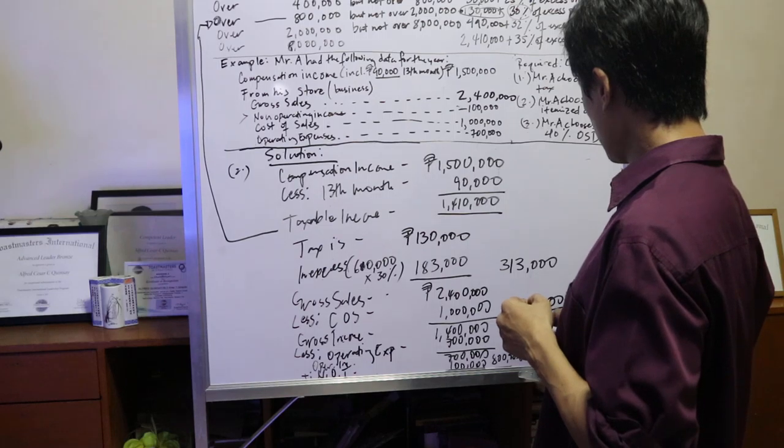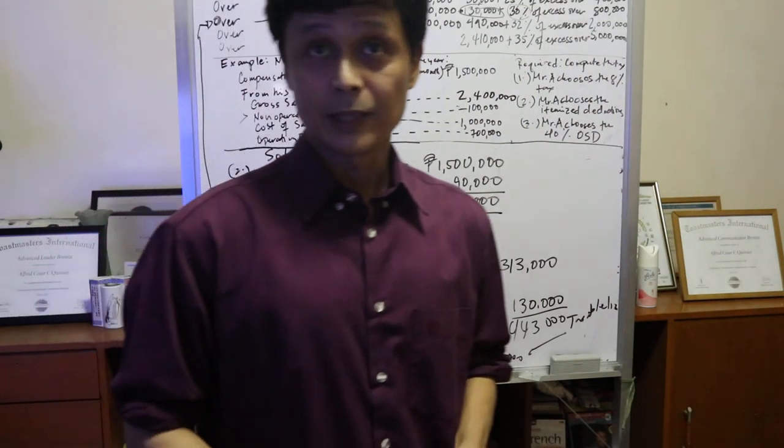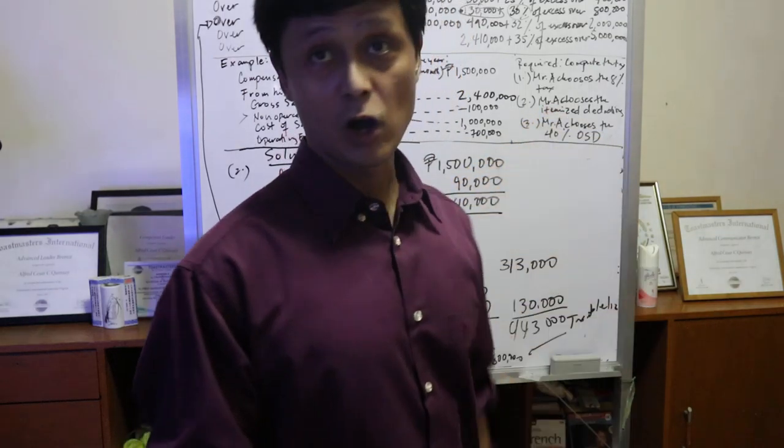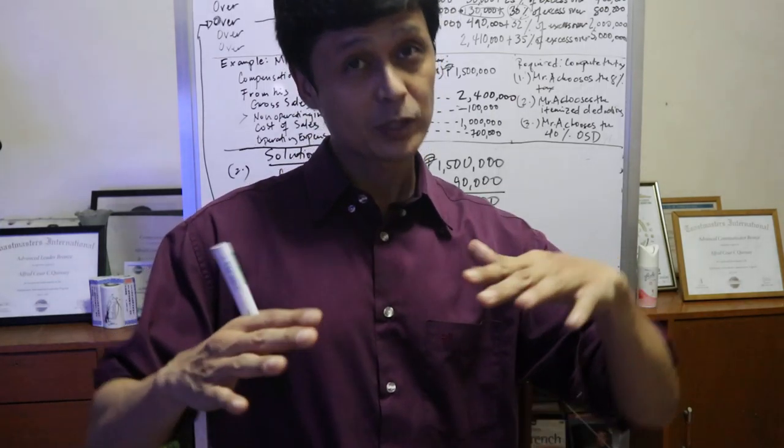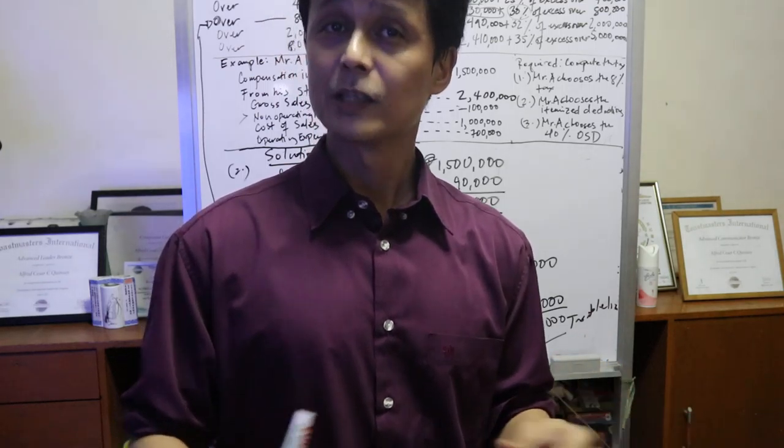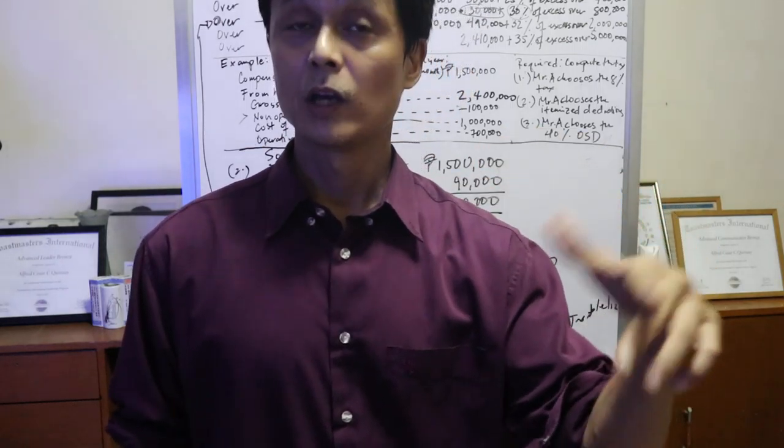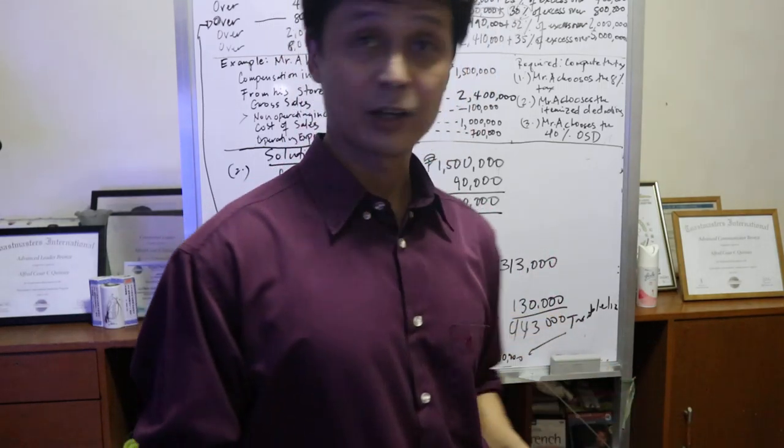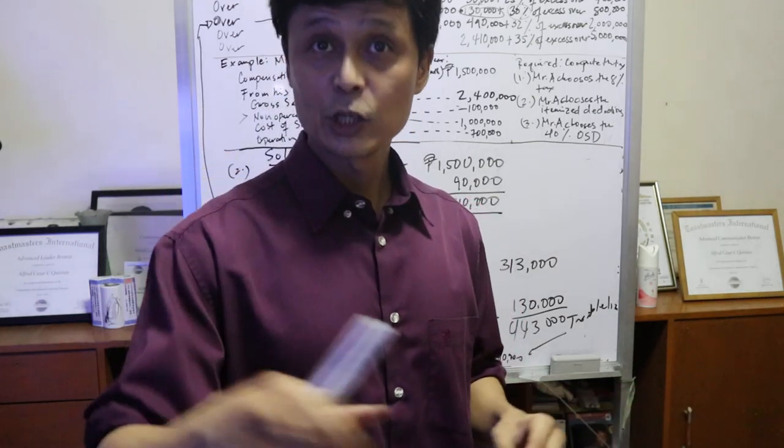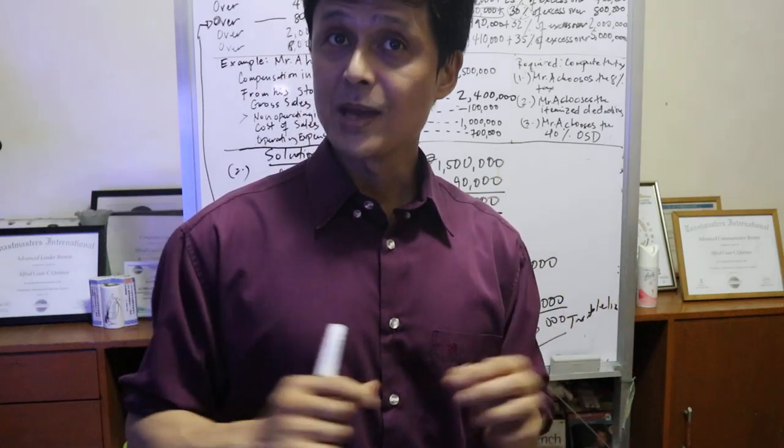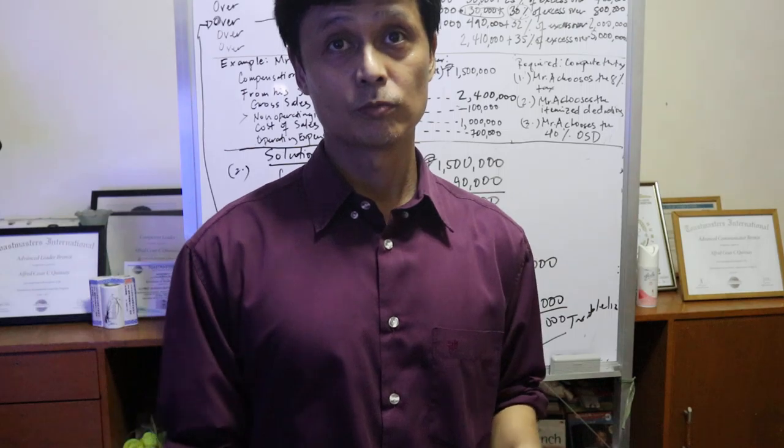So that's it. This is the second option, the itemized deduction for mixed income earners. So mamimili ka ngayon kung ano yung mas mababa. Para yun yung babayaran mong tax. This is a legal way of minimizing your taxes. Yung una, if you still remember, that's 513,000 yung total. This one is 443,000. So medyo mas mababa ito, so this seems to be more advantageous. Anyway, see you on the third session for our mixed income tax earner. Don't forget to subscribe, and if you have any questions, comment below. God bless.